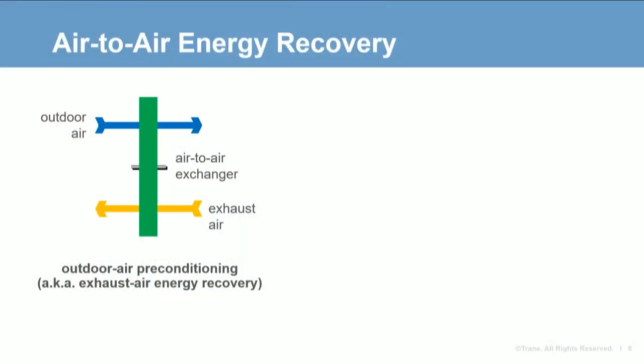Air-to-air energy recovery refers to the transfer of sensible heat, or sensible heat and moisture, between two airstreams. The most common use is to precondition outdoor air as it enters the building for ventilation by exchanging energy with a separate airstream. An air-to-air exchanger transfers energy between outdoor air being brought into the building and the exhaust or relief air leaving the building. This is commonly referred to as exhaust air energy recovery.